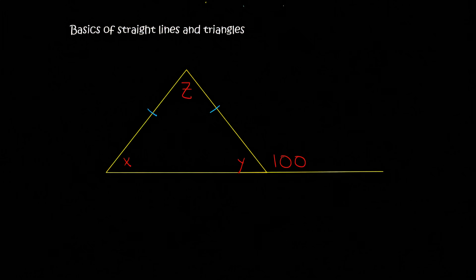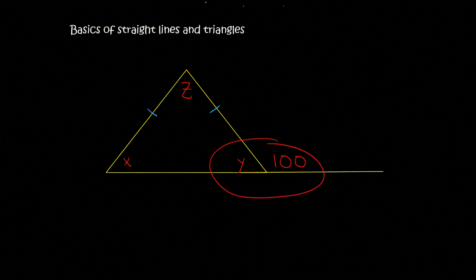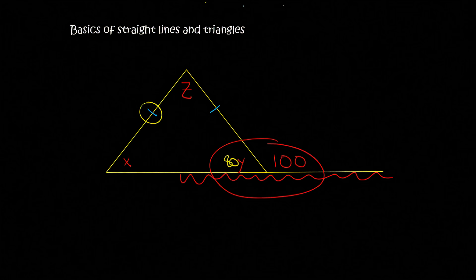Here's a little practice test — we need to find the angles X, Y, and Z. If we look over here, that is a straight line. We know that those two angles must add up to 180, so straight away Y will have a value of 80. Then these two lines are telling us that those two sides are the same length, which also means the two angles opposite those sides are the same.